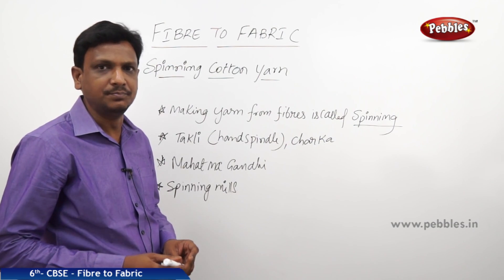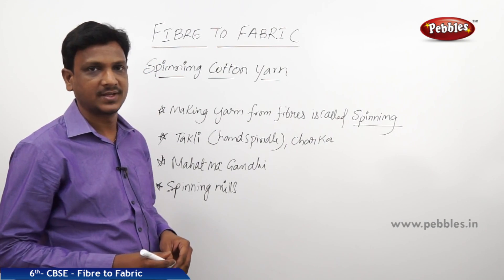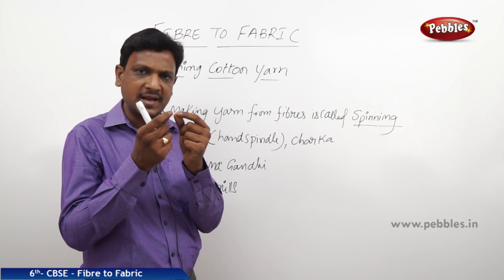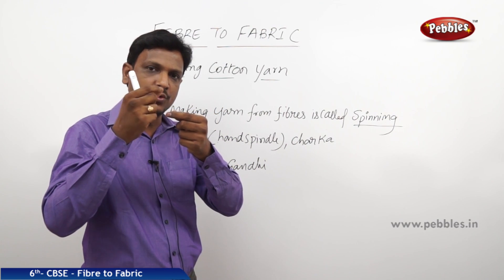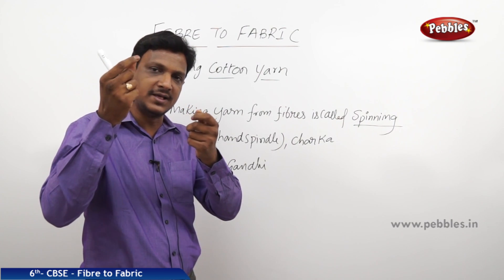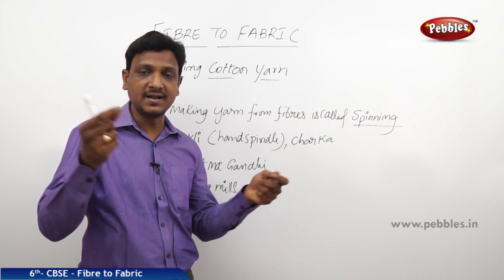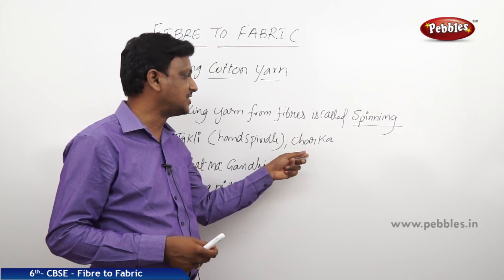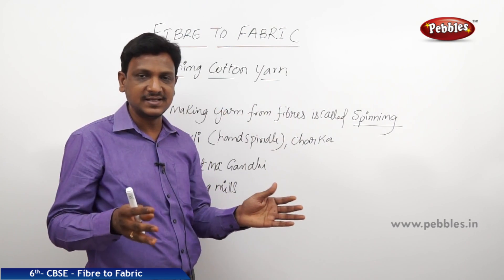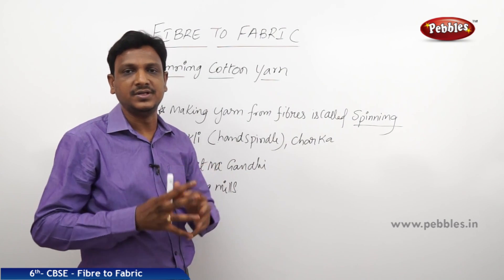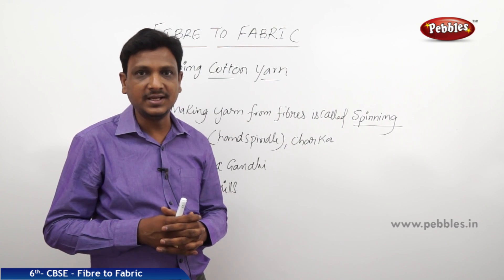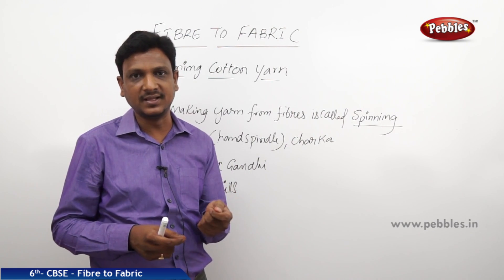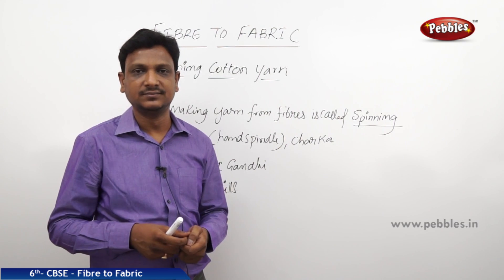Spinning is done with simple devices like a takli, also called a hand spindle. You can put cotton wool in one hand, pull the wool, and spin it by twisting the fibers to make yarn, but it may not be strong enough. To make good yarn, you need either a takli, hand spindle, or charka. A charka has a wheel setup that is rotated and the wool is made into yarn. You might have seen the charka in pictures of Mahatma Gandhi.